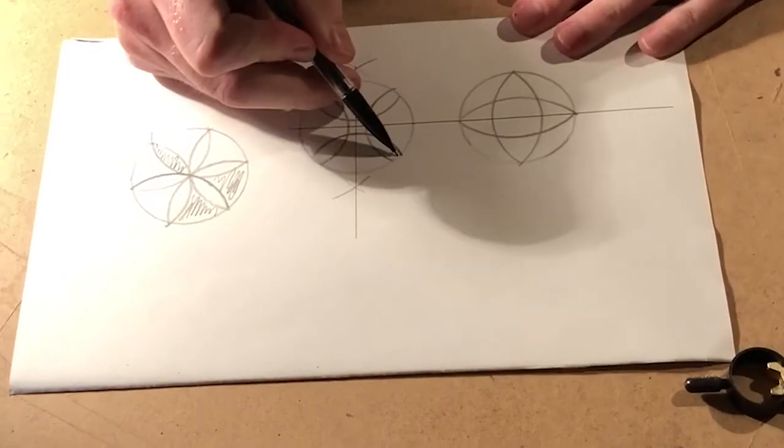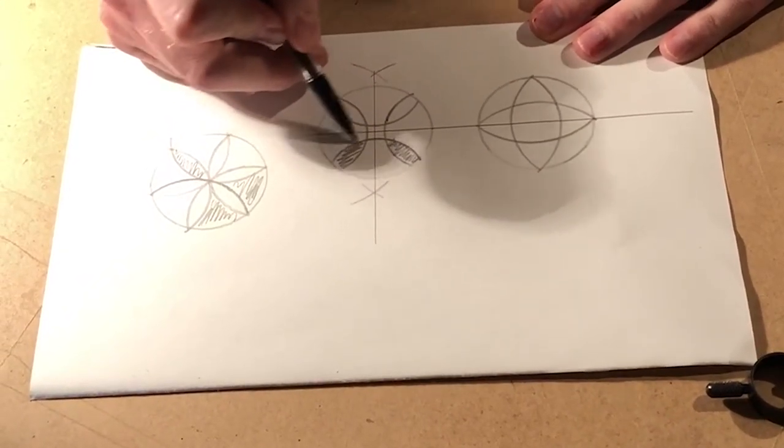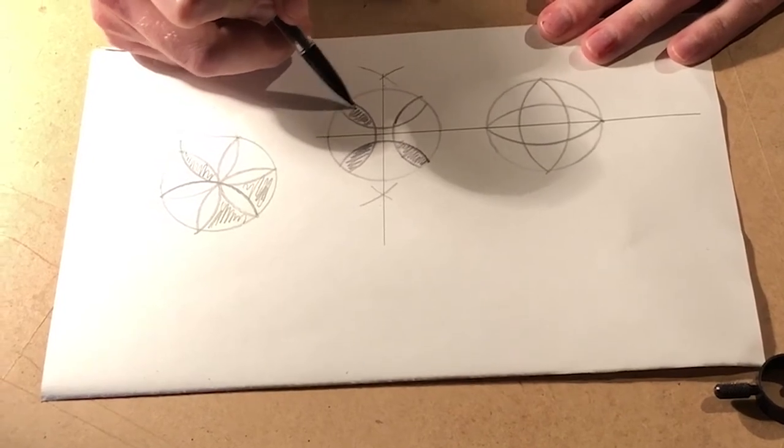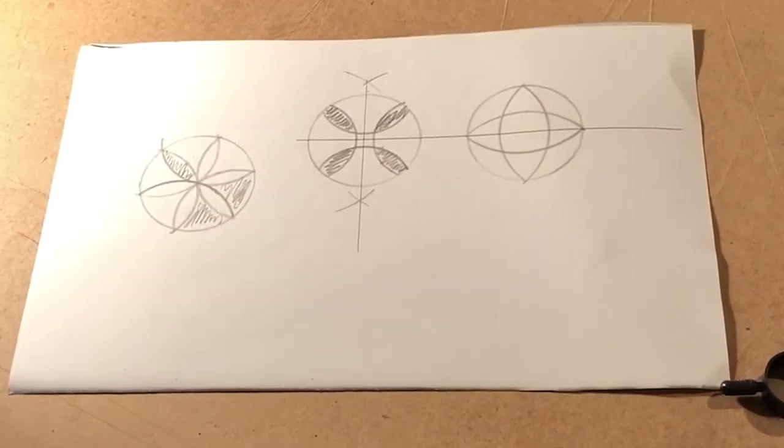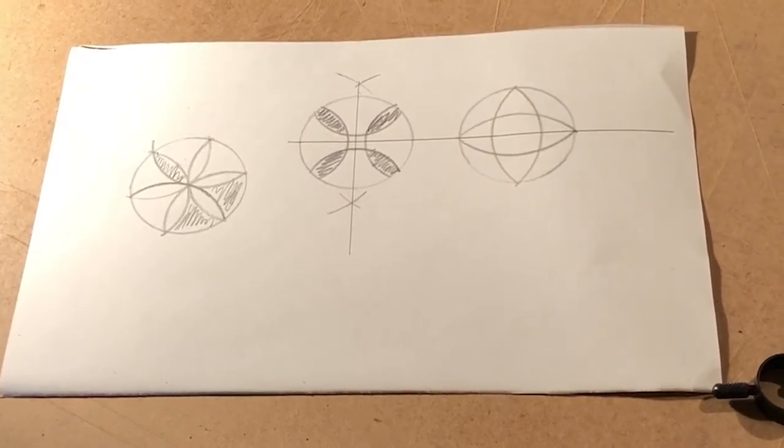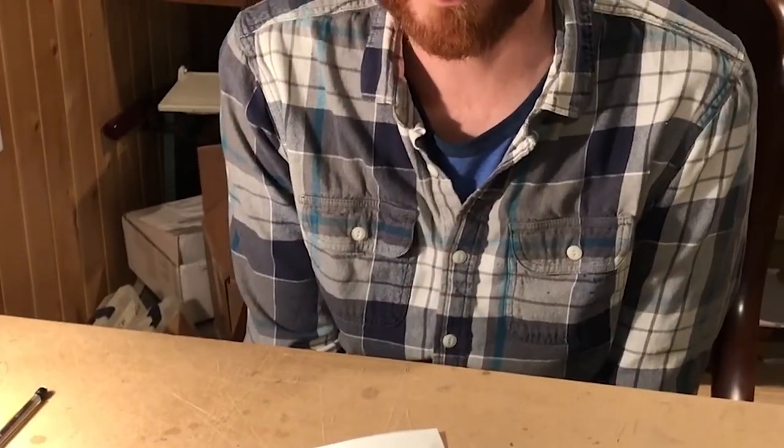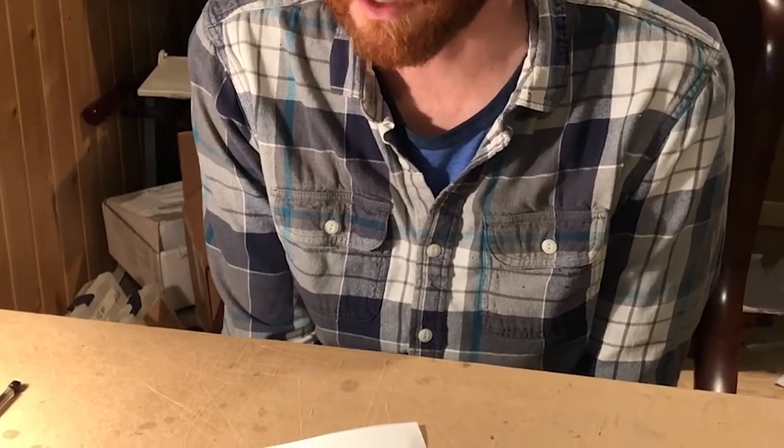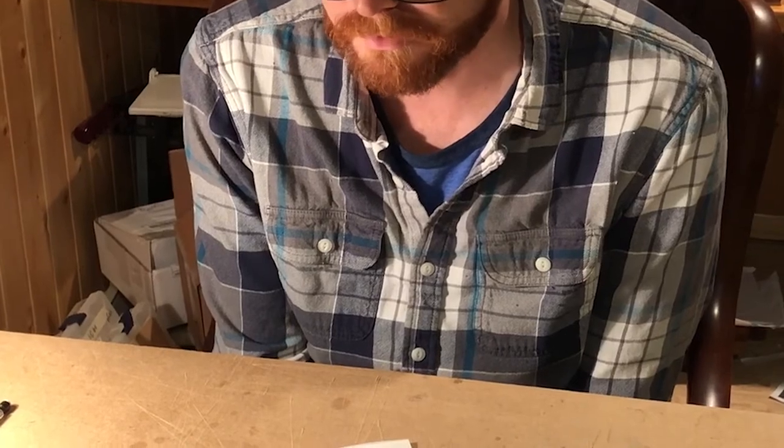This design here is sometimes called a German cross. So you can see—four-point rosette but two very different designs. It's like that for all the chip carving rosettes. I feel like it's something that you learn in a day and spend the rest of your life trying to get good at it and playing with all the different designs you can make. So that's that. Danke.